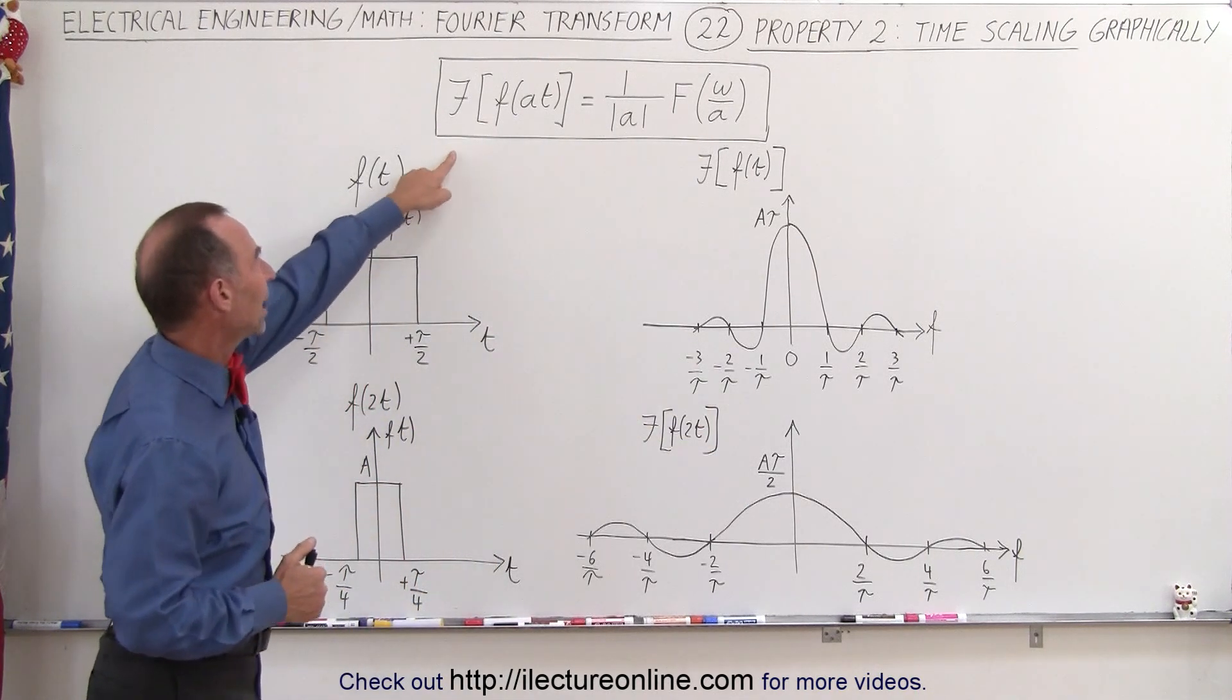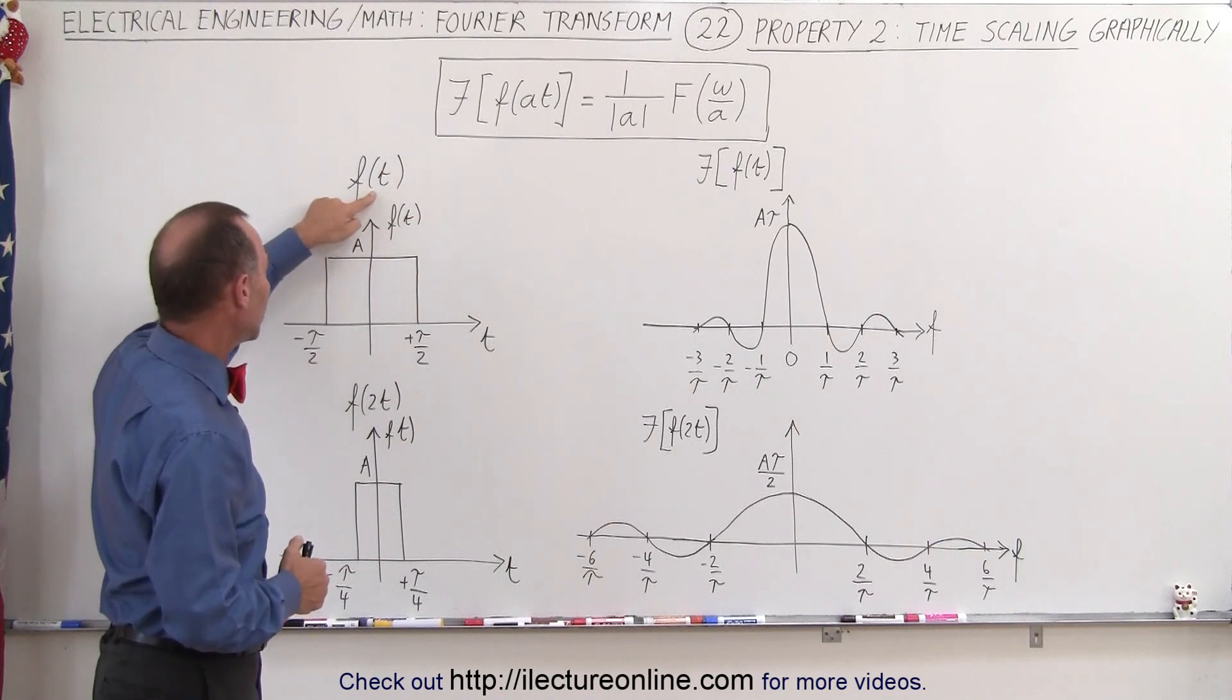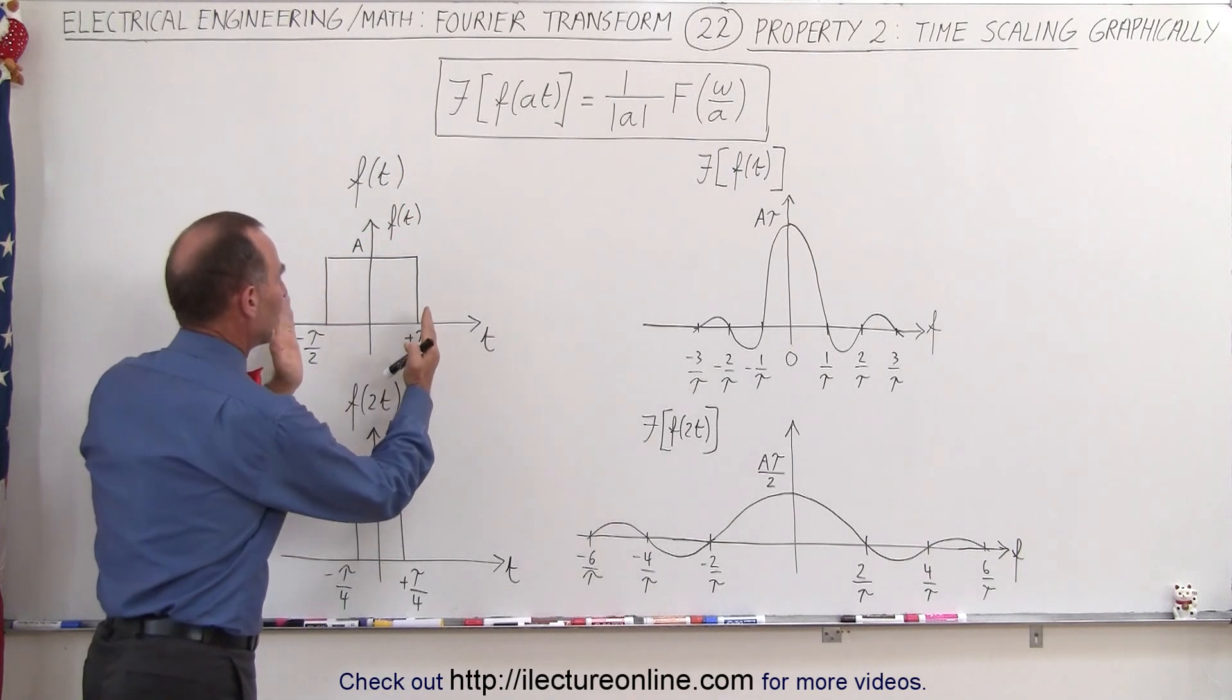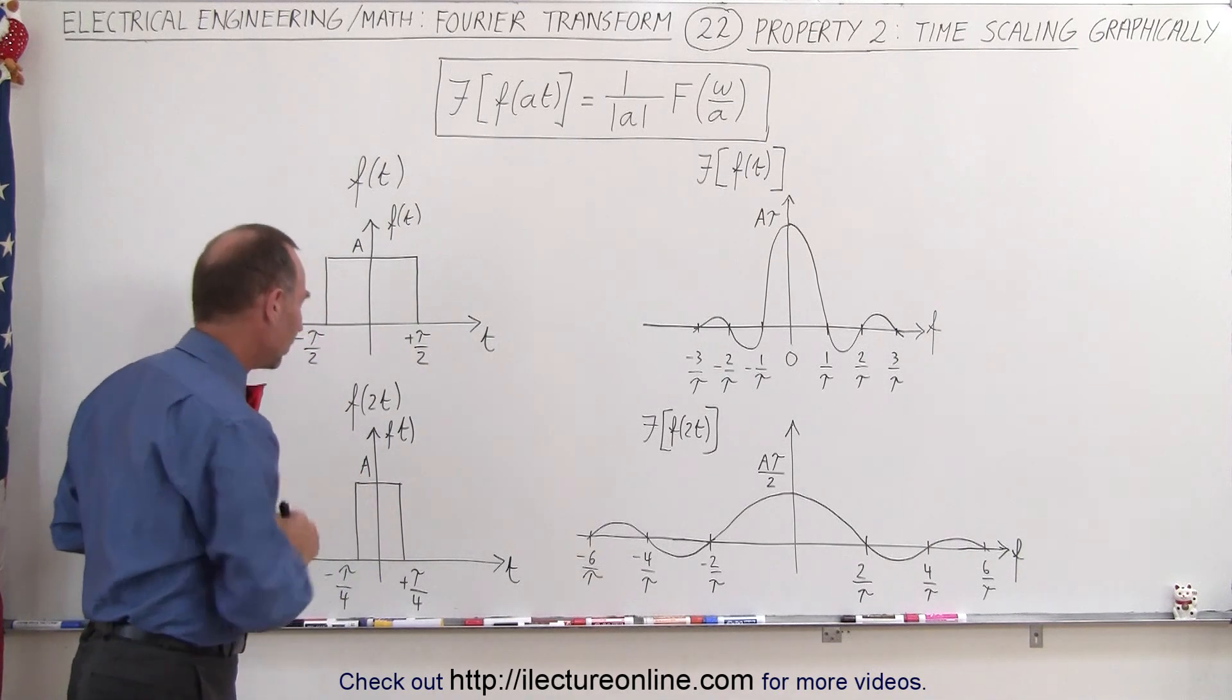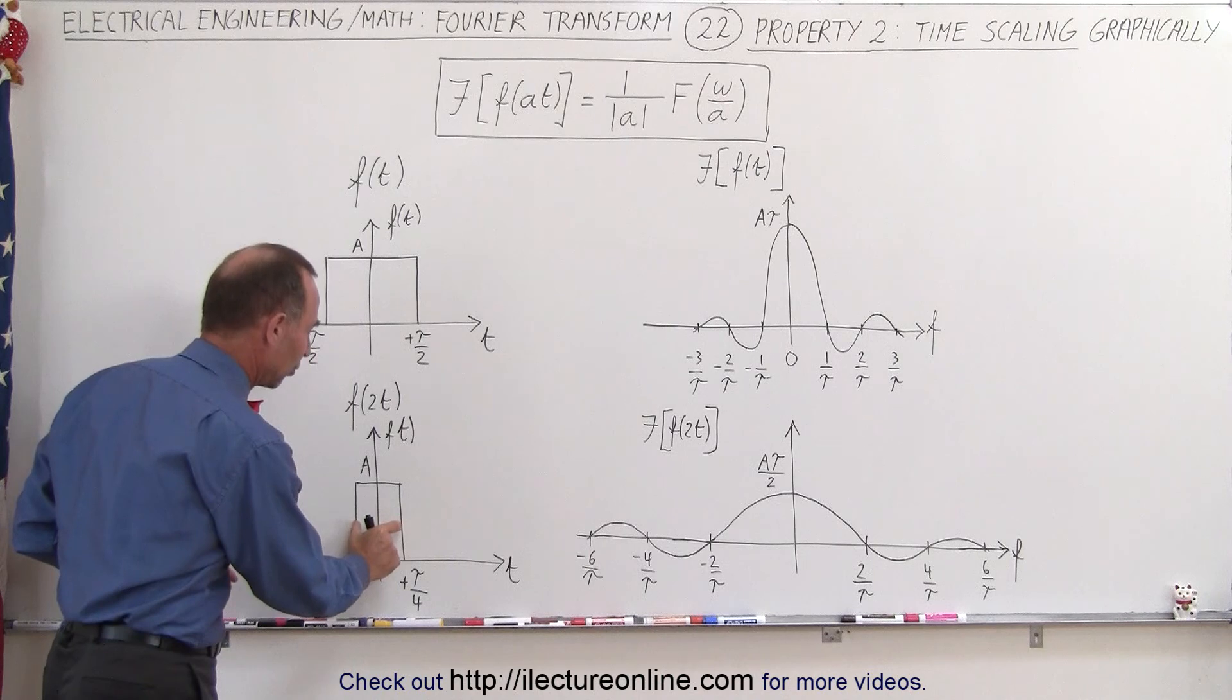So if we change the time scaling when we go from f(t) to f(2t), in essence it shortens the pulse because you speed up the pulse. For example, you get there quicker, and so the effect is that the pulse will be narrower.